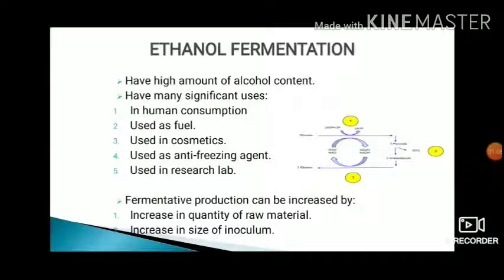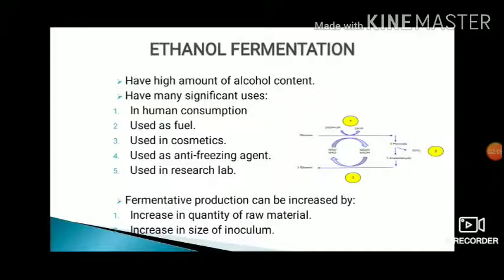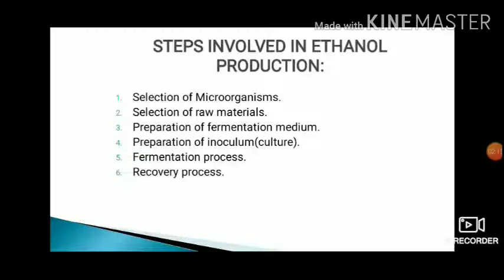The basic process in ethanol production uses chemical and biological means to produce glucose. The basic fermentation process involves basic 6 steps — or 4 to 5 steps.